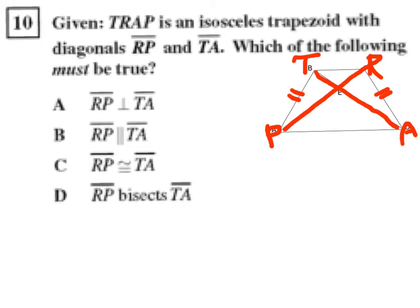Okay, so which of the following must be true? Looking first at A, they say that line segment RP is perpendicular to TA. It looks like that could be possible in some cases, but not specifically the picture that we're looking at. So, if it's not true all the time, then we should write that one off.